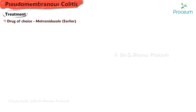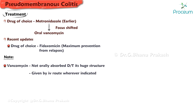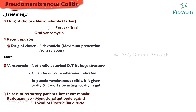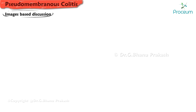Regarding treatment, the drug of choice was earlier metronidazole, then focus shifted to oral vancomycin, but as per recent updates fidaxomicin has become the drug of choice as it causes maximum prevention from relapses. Note that vancomycin is not orally absorbed due to its large structure and is given intravenously in most conditions, but in pseudomembranous colitis it is given orally to act locally in the gut. For refractory patients, the last resort is bezlotoxumab, a monoclonal antibody against toxins of Clostridium difficile.